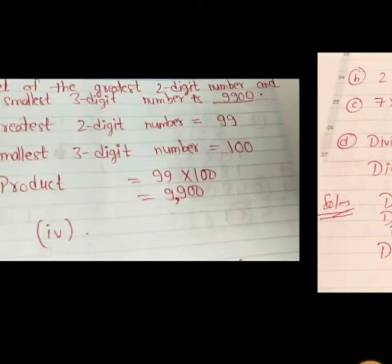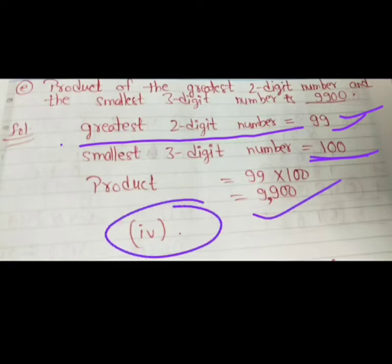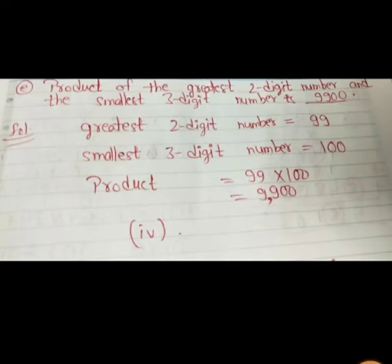Now next question, question E part, the product of the greatest 2 digit number and the smallest 3 digit number. The greatest 2 digit number is 99. Smallest 3 digit number, that is 100. So in dono ko multiply karenge, 99 ko multiply karenge 100 se, to humare paas aagaya 9900. That is option number 4. Ye hogya question number 1. Ab karenge question number 2.